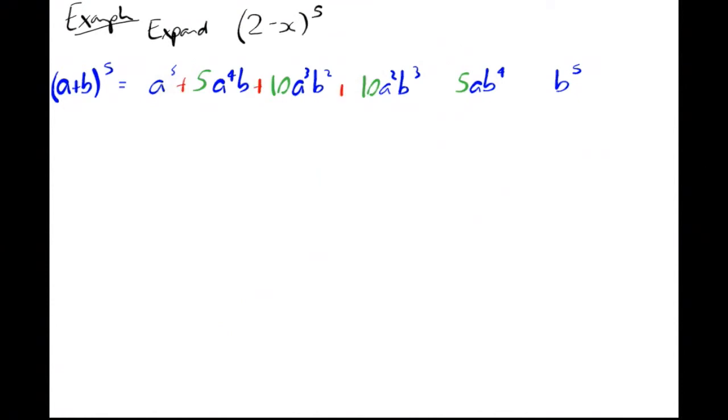We'll have a look at another example that's slightly different. Expand (2-x) to the power of 5. Well, it's easy for us to do (a+b) to the 5, so we'll do that: a⁵, a⁴b, a³b², a²b³, ab⁴, b⁵. Put our coefficients in from Pascal's triangle: 1 5 10 10 5 1. Our formula before worked because it was a plus b, there's going to be pluses between them all, but in this case we've got a is 2 and b is minus x.